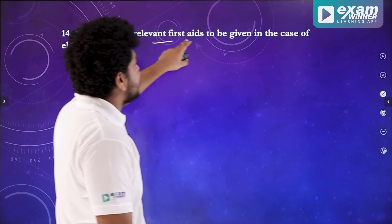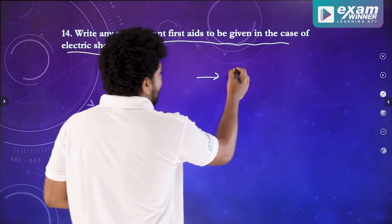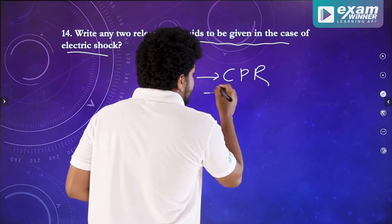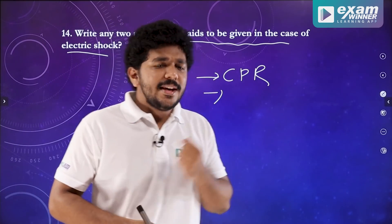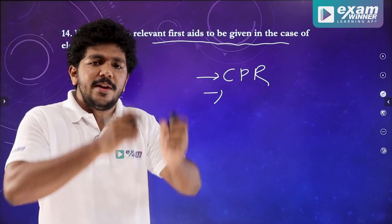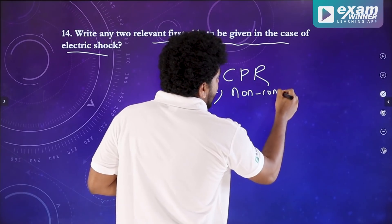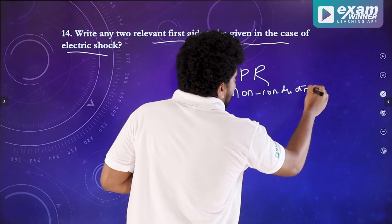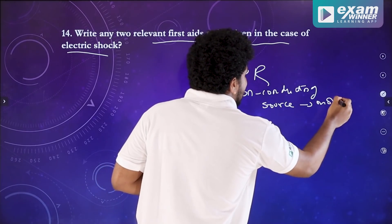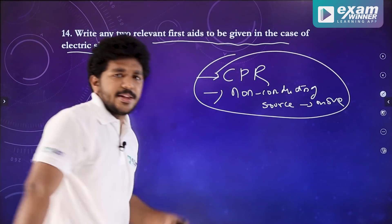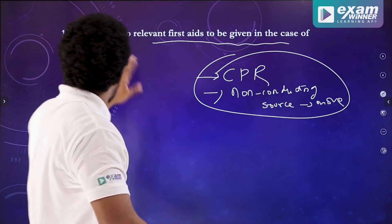Write two relevant first aids to be given in the case of electric shock. There is CPR and mouth-to-mouth breathing. What is the source of an electric shock? It is a non-conducting material. If you are a non-conducting material, separate the person from the source. Then you apply first aid. It is a simple idea.